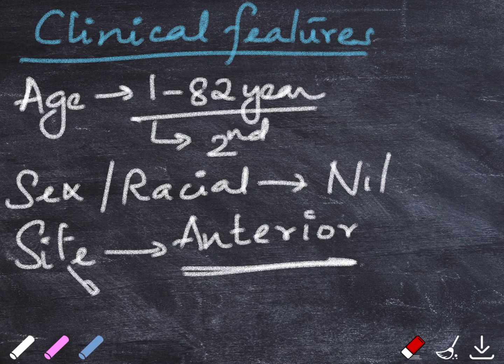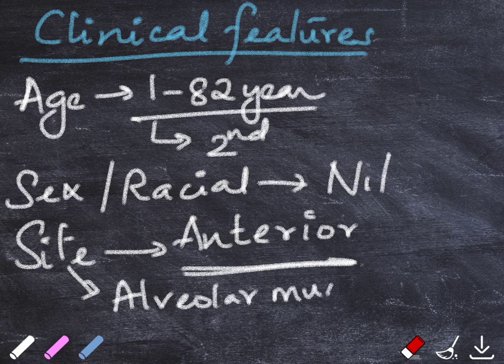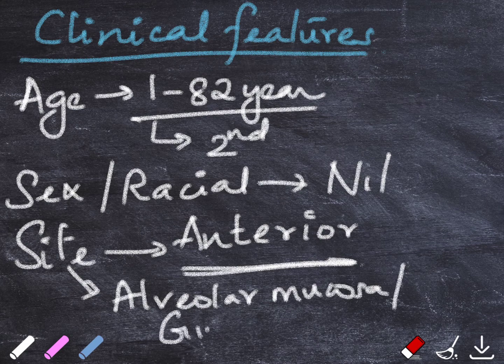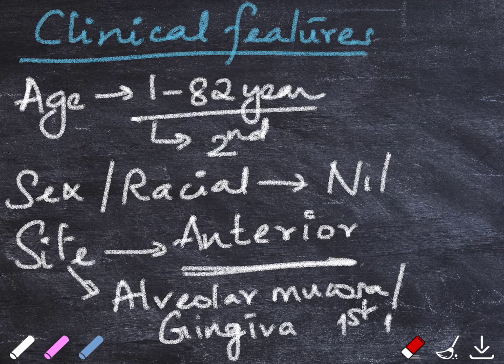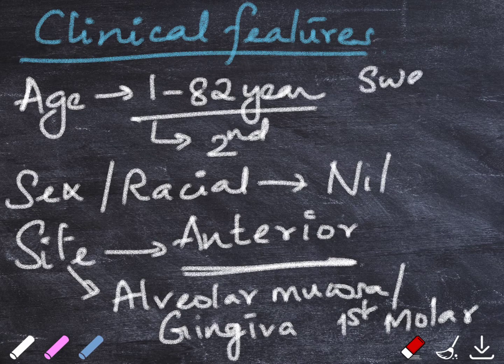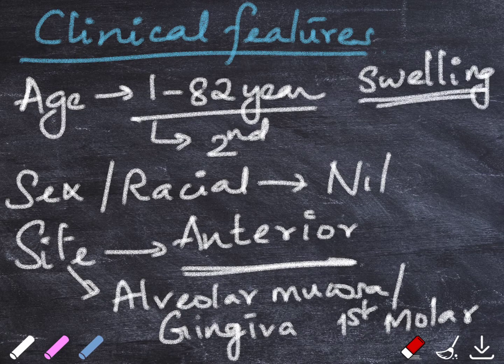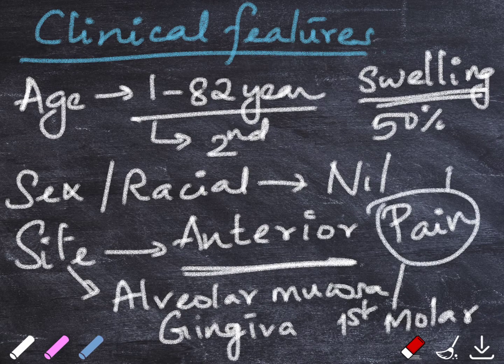In peripheral lesions, both the maxillary as well as the mandibular gingiva and alveolar mucosa anterior to the first molar are commonly affected. In 50% of the cases, the most common complaint is swelling and pain is a rare occurrence for this group of patients.